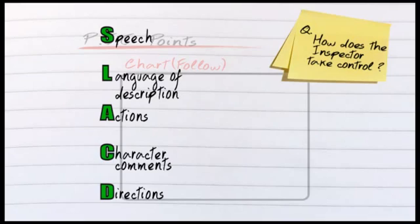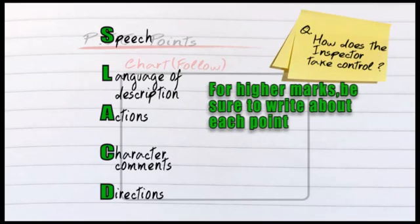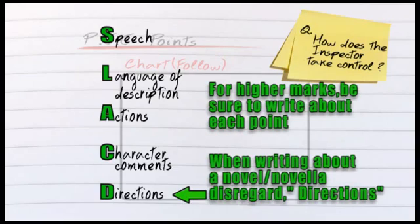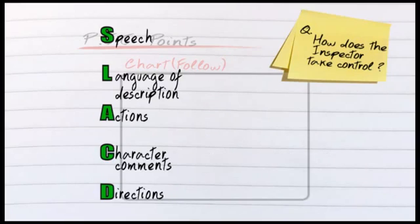All of these will give us things to talk about and show the examiner that we understand the entire craft of the writer. For a play it will include all five, but when you come to write about a novel or novella, you won't include the directions because in a novel you'll focus more on the language of description.